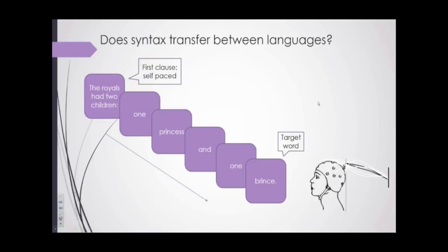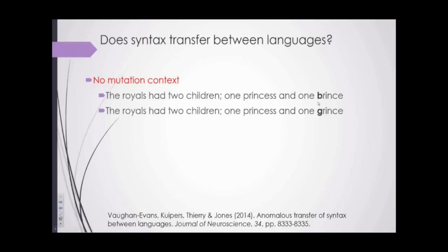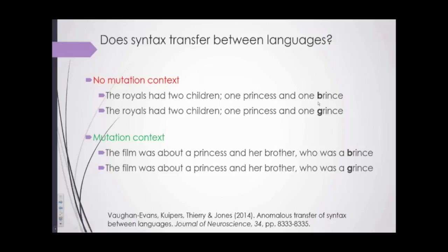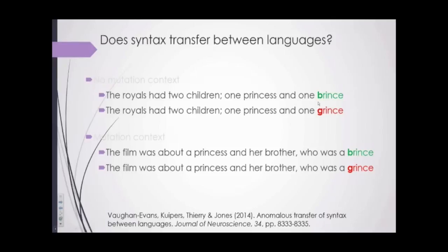In order to control for that, we added a factor of context. Half of our sentences were no-mutation context sentences — if translated into Welsh, they would not end in a mutation. The other half were mutation context sentences — if translated into Welsh, they would end in a mutation. If effects are simply due to familiarity, we'd expect a difference between 'brince' and 'grince' irrespective of context. But if it's syntactic transfer, we shouldn't see a difference in no-mutation context sentences and should see a difference in mutation context sentences.